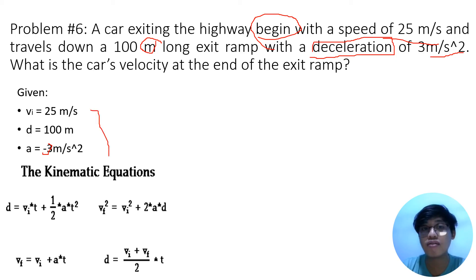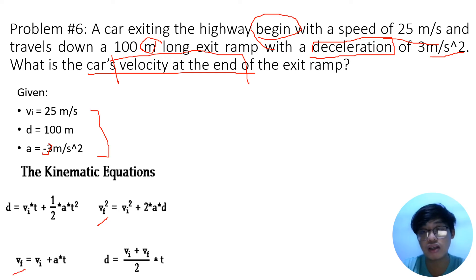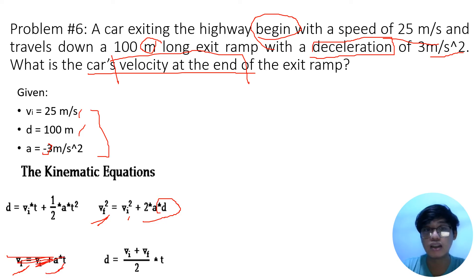After identifying the variables, we need to identify the formula to use. We're looking for the car's velocity at the end — so that's the final velocity. Two formulas offer the final velocity. Both have initial velocity. Checking for distance: one formula has distance, the other does not — so we eliminate the one without distance. The formula we will use is: vf² = vi² + 2 × a × d.